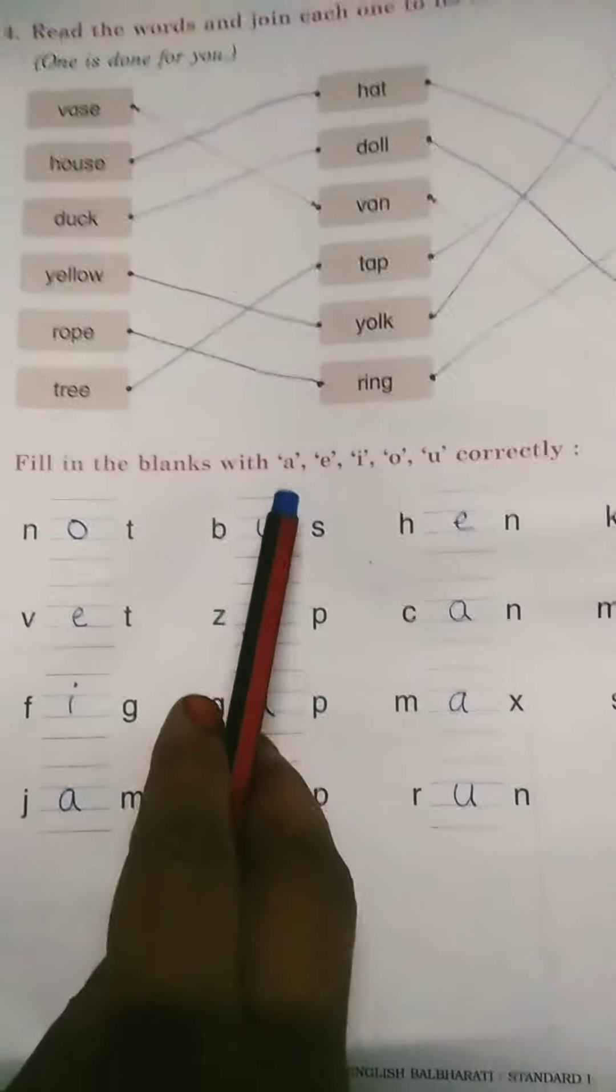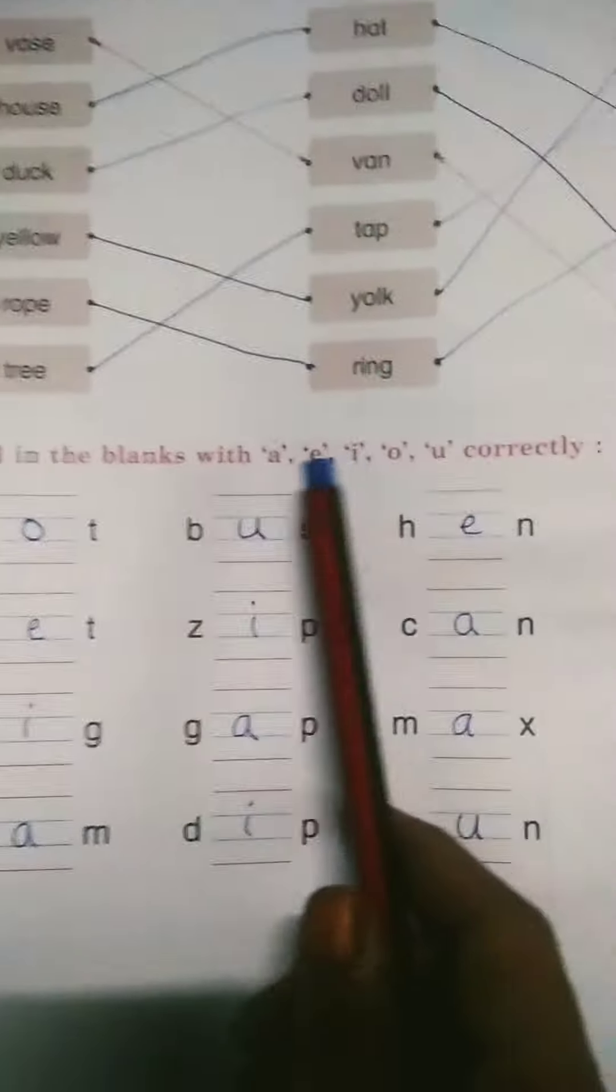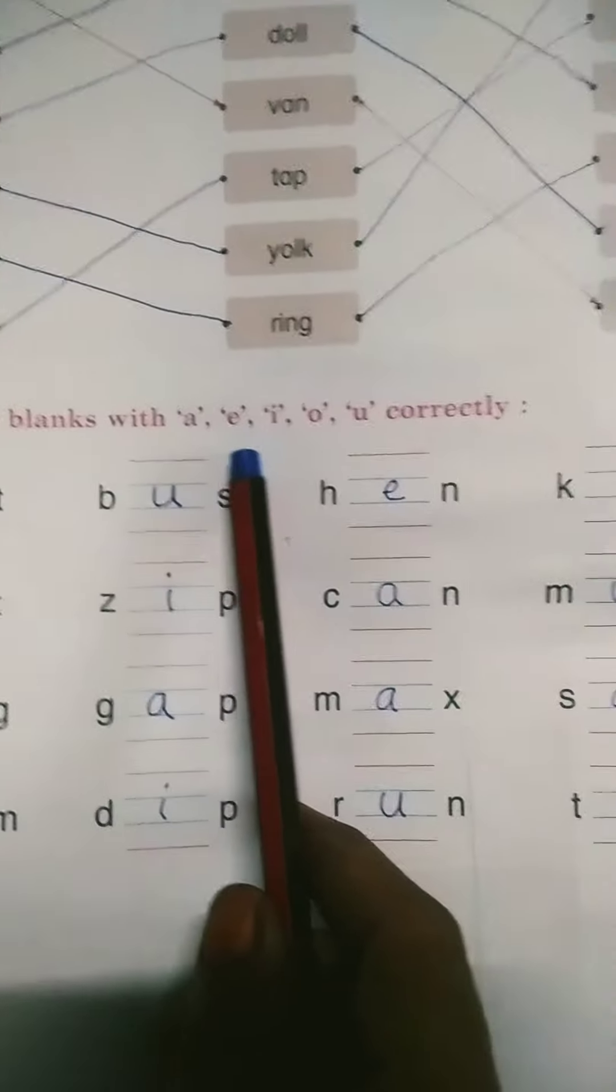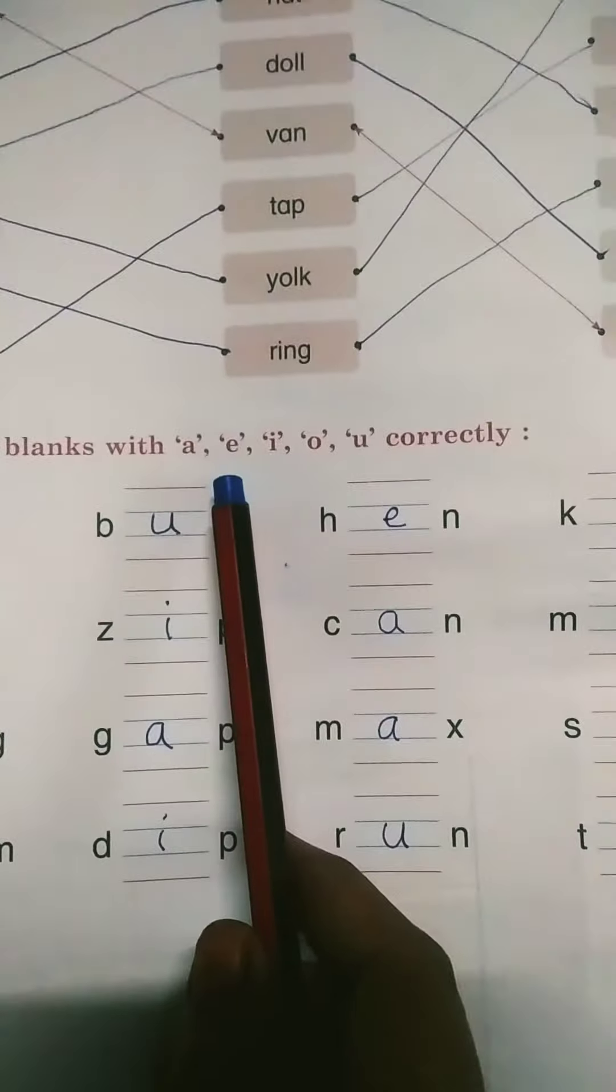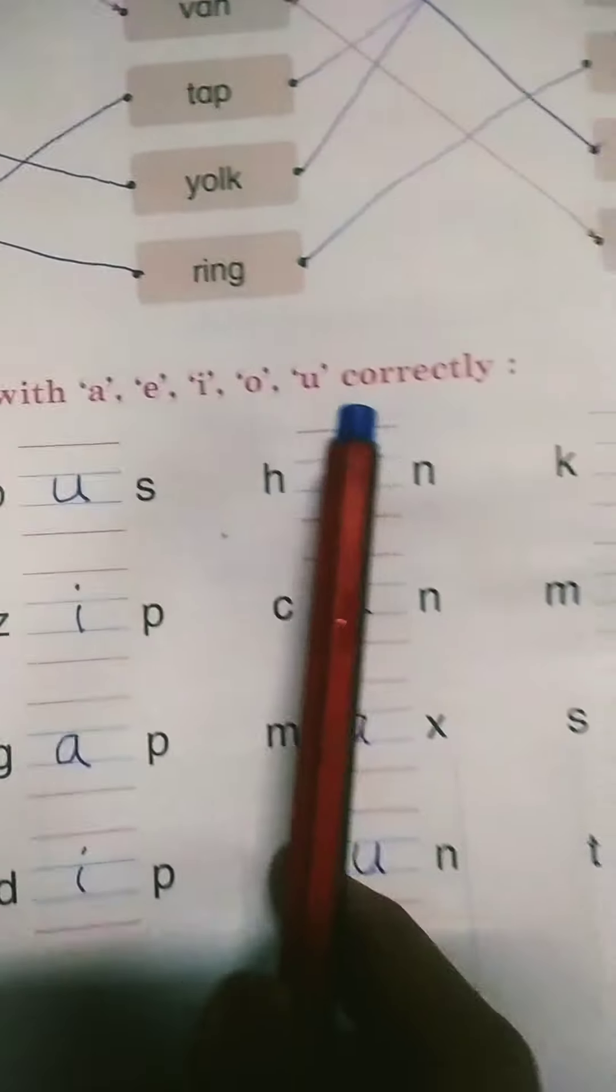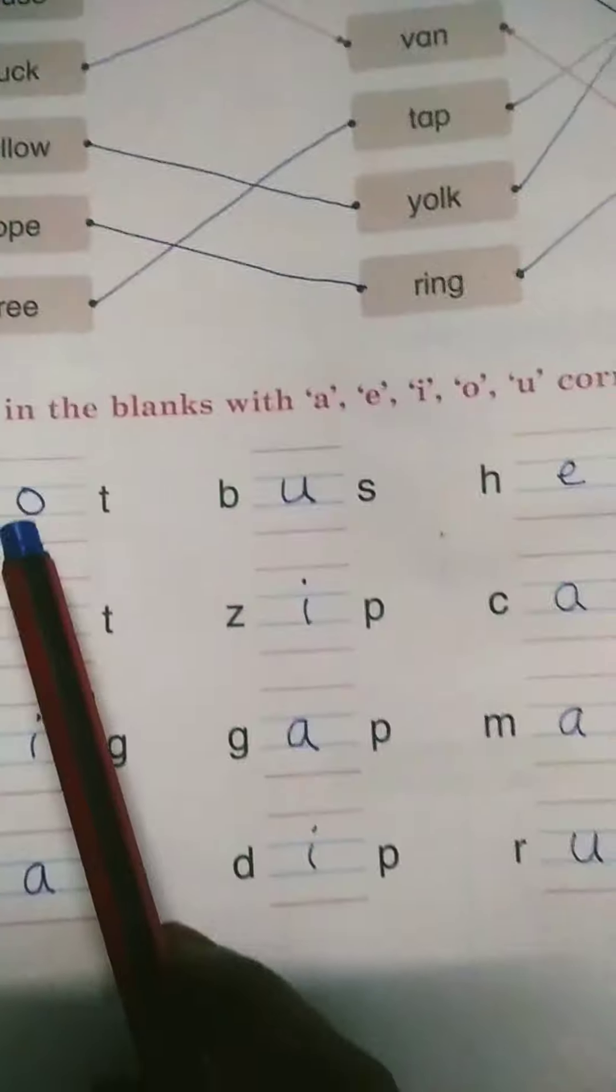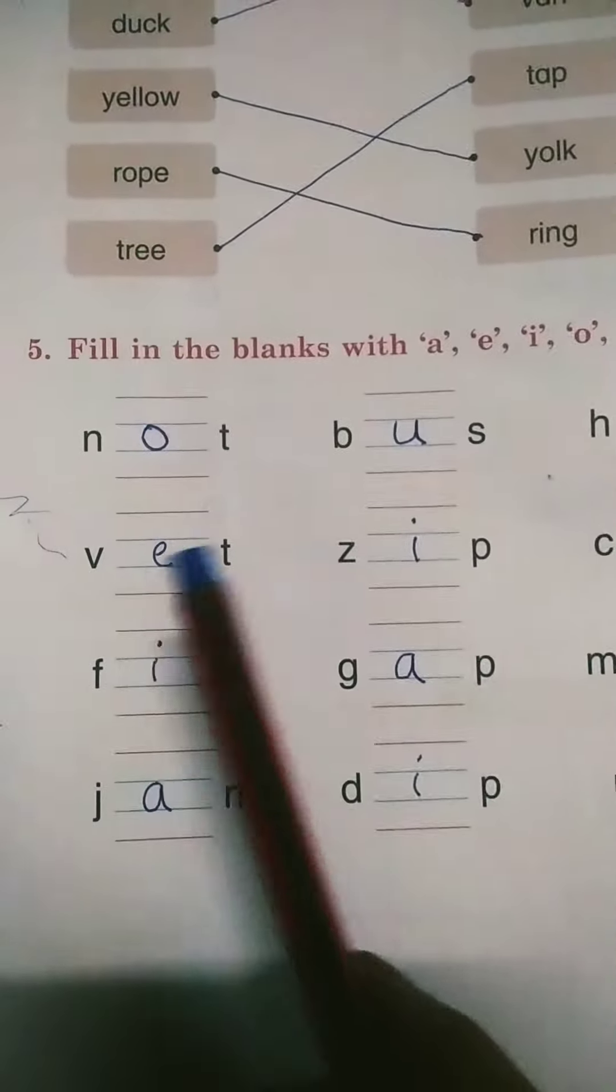Do it fast. Now fill in the blanks with a, e, i, o, u. This is a, e, i, o, u - these are the vowels here, okay? So we have to use the vowels and complete our spellings.